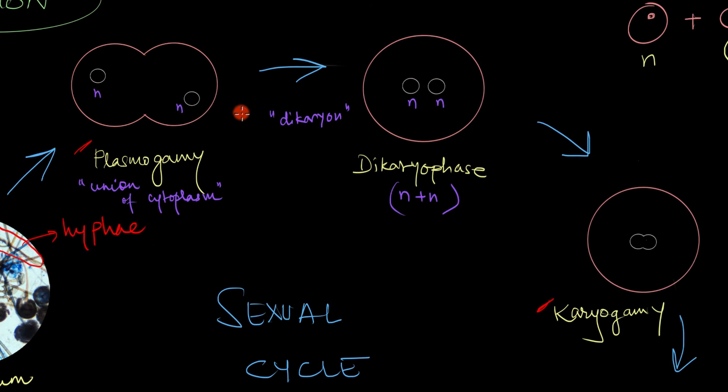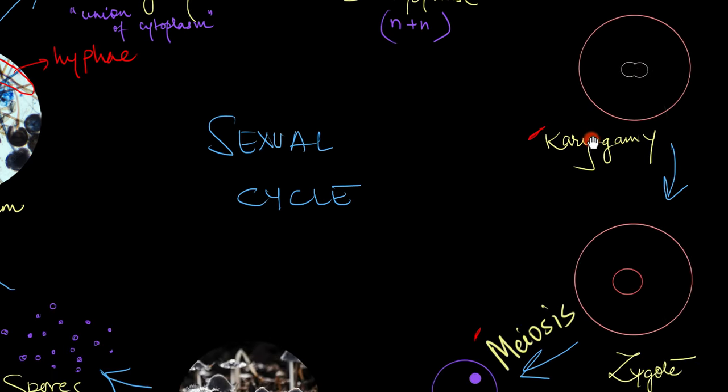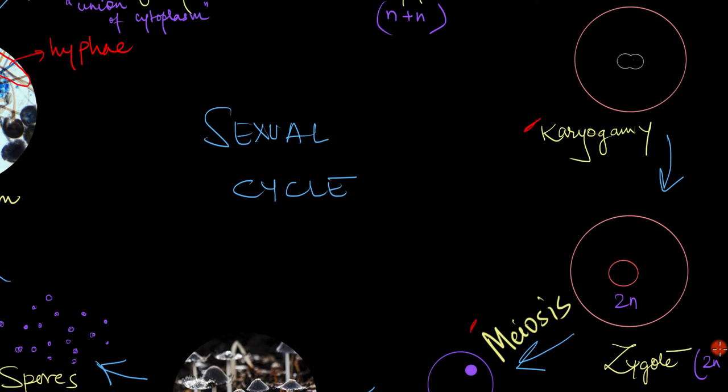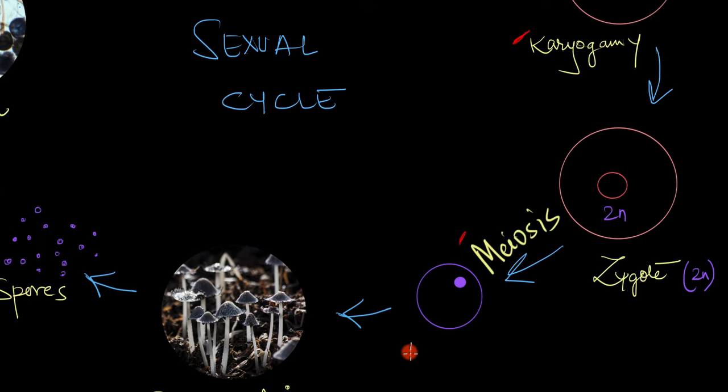After the fusion of cytoplasms, naturally, the next step is the fusion of nuclei, that is karyogamy. Once this fusion is complete, it's going to give us a diploid cell or a 2N cell. This diploid or 2N cell is called the zygote. Karyogamy is then followed by meiosis.